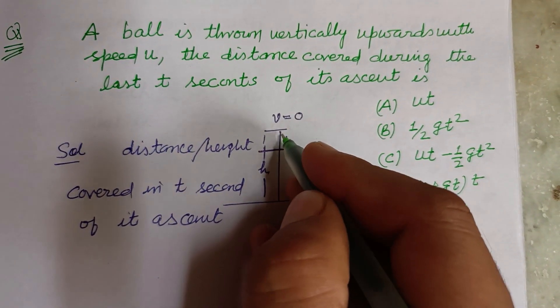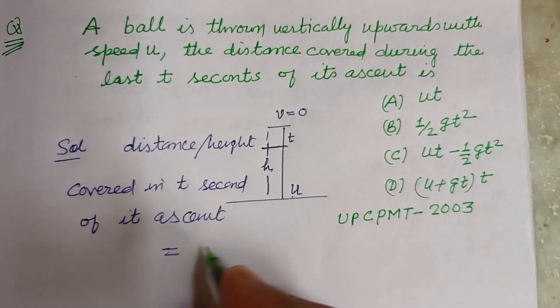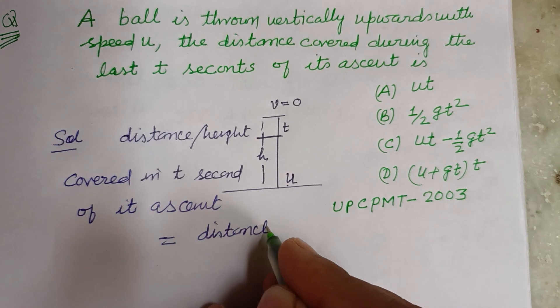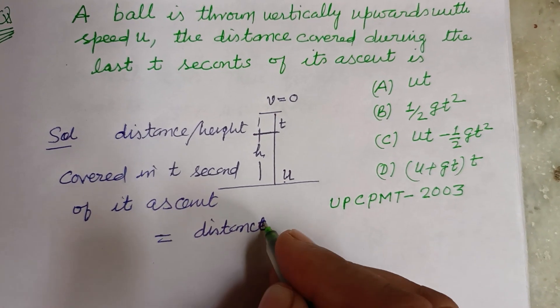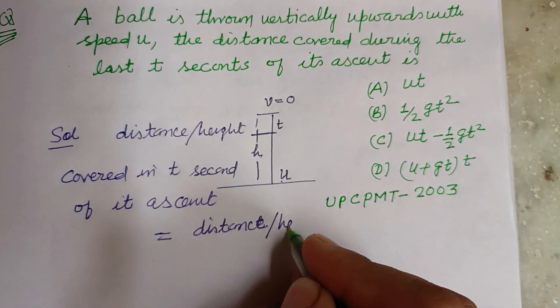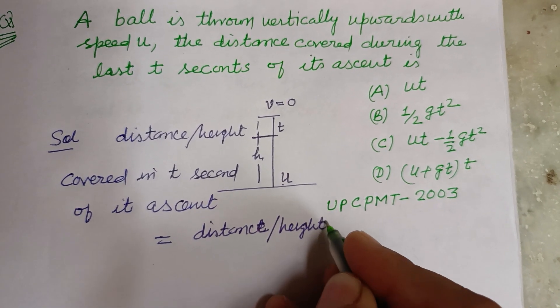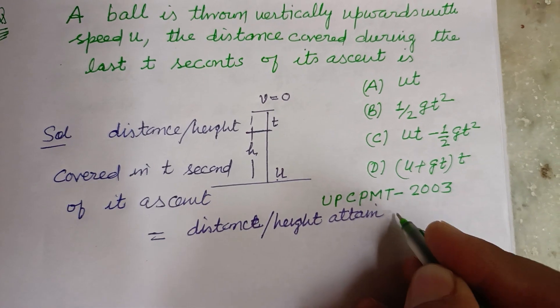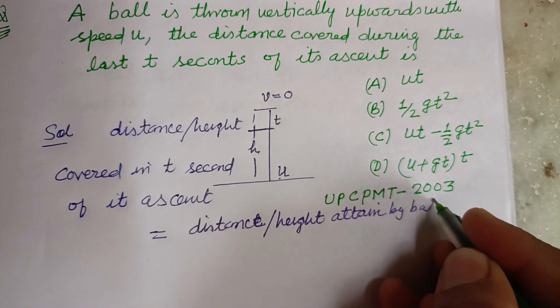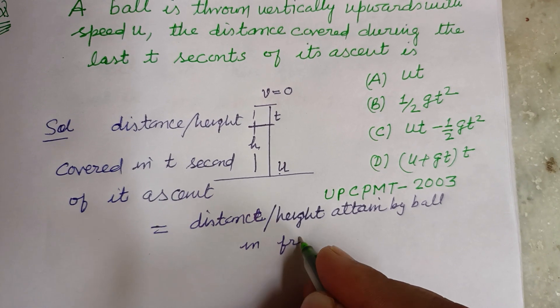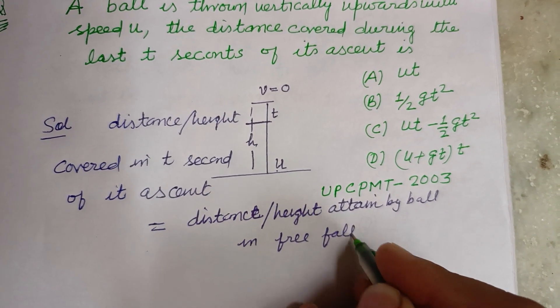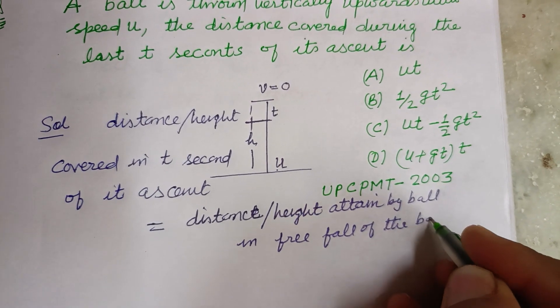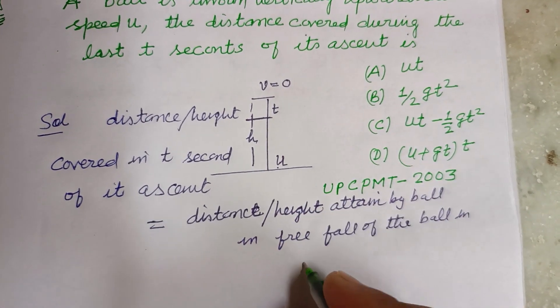is equal to distance or height attained in free fall of the ball in t seconds.